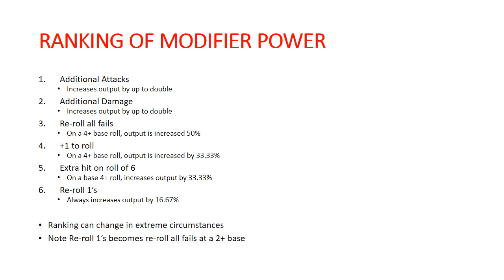Remember that the percentage increase isn't necessarily always what you want to be concerned about — it's what the ending percentage is. Taking a six-up to a five-up doubles your output, but it's still a very high chance to fail, so you want to take that into consideration. Because it's become so prevalent, extra hits on a roll of six: on a four-up roll, that's increasing your output by 33% as well, though it varies based on how good your hit roll actually is.